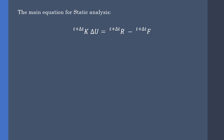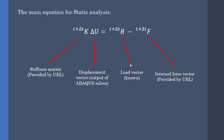The main equation for static analysis is as follows, in which we have to obtain the delta U for our problem. Abaqus takes care of the solving procedure, but we have to define the stiffness matrix and we have to define the internal force vector. The stiffness matrix is going to be called the A matrix, and the internal force vector is going to be called the right-hand side, or in short, the RHS vector.